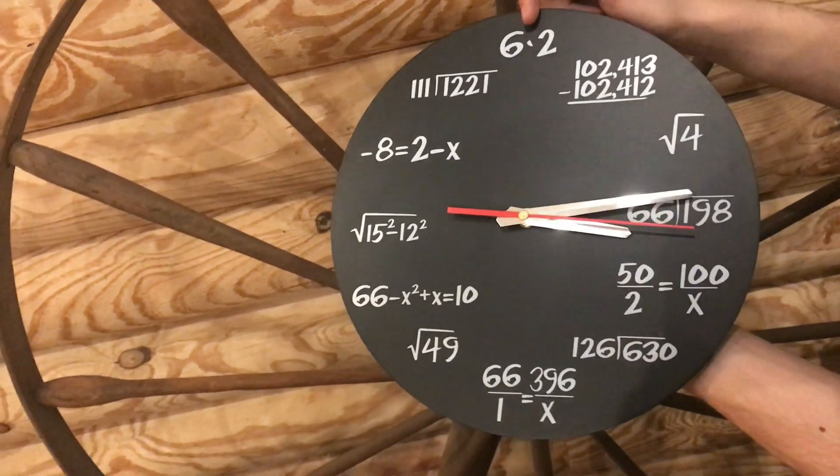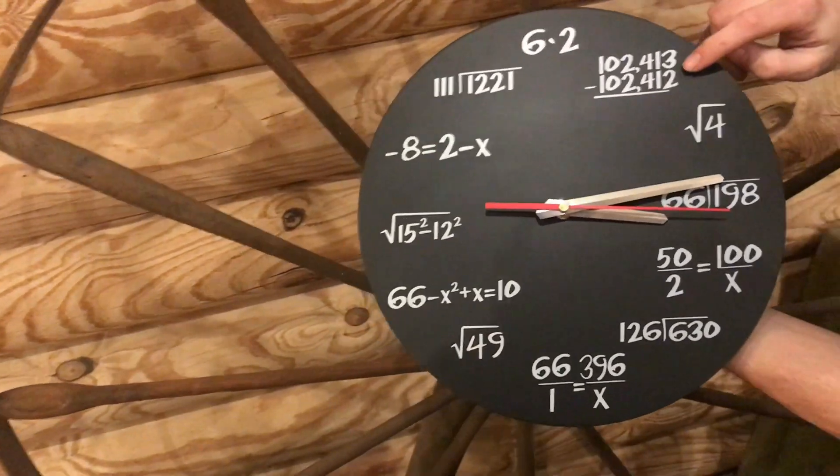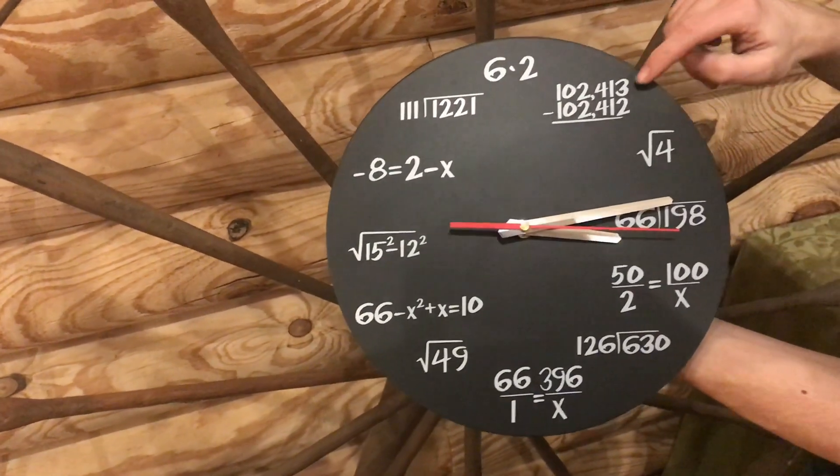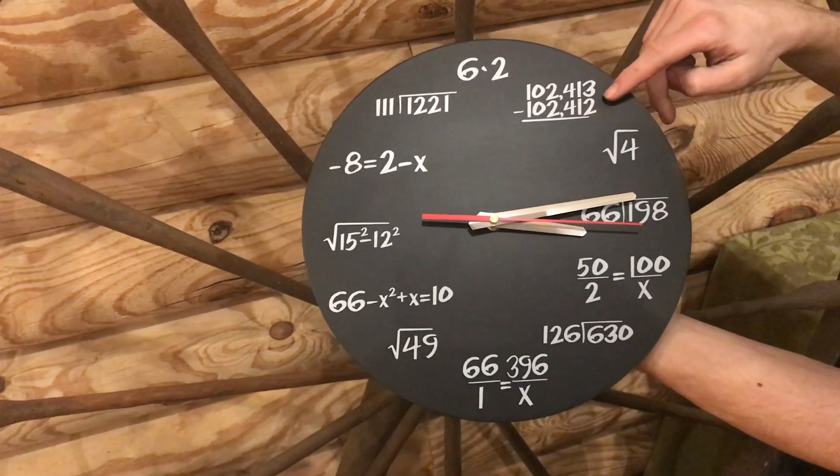This would be 6 times 2, simple, that's 12. These two numbers have a difference of 1, so subtract them, you get 1.